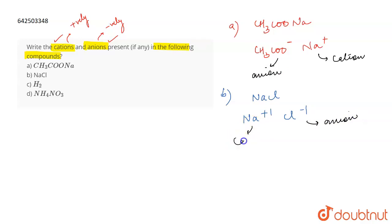Coming on to the c part, which is H2. Now talking about H2, a covalent bond is present between two hydrogen atoms, so there is no polarity.